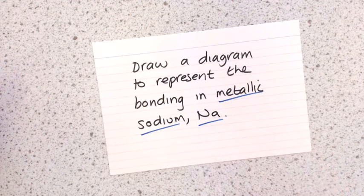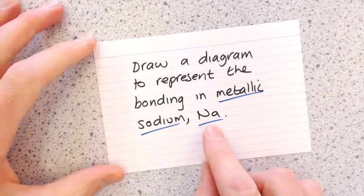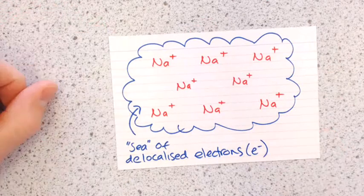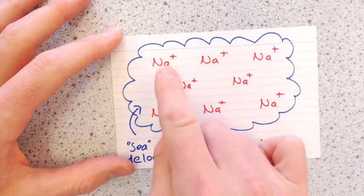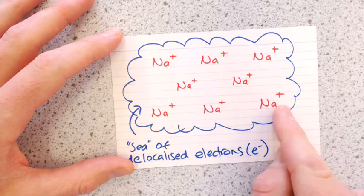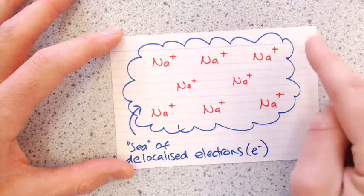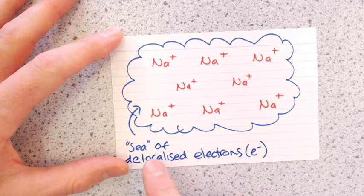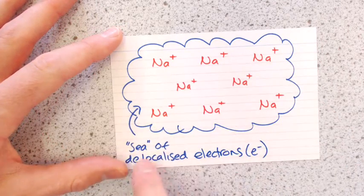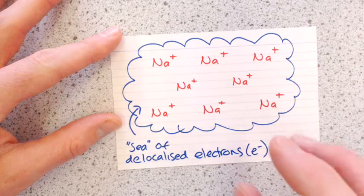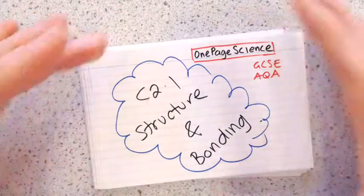The last and probably easiest diagram to draw is metallic bonding, using sodium as the example. You draw positive ions arranged in a regular pattern — because each sodium has lost its electron — and then surrounding all those positive ions you draw a cloud labelled 'a sea of delocalized electrons.' And that's C2.1 Structure and Bonding done.